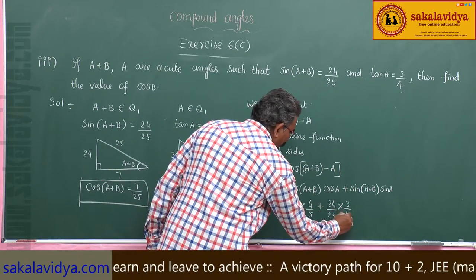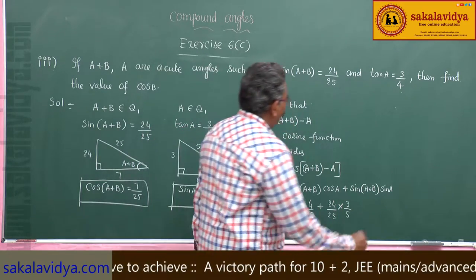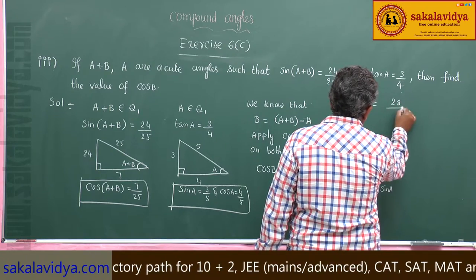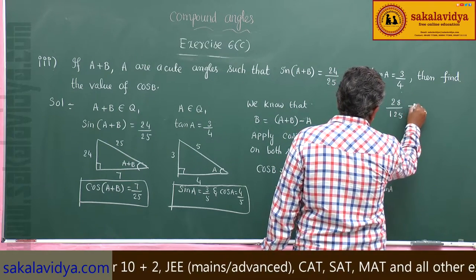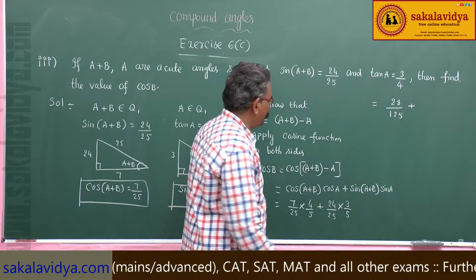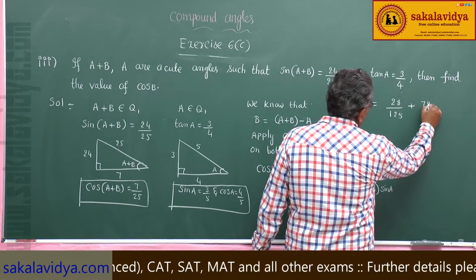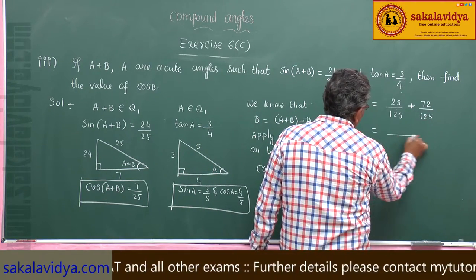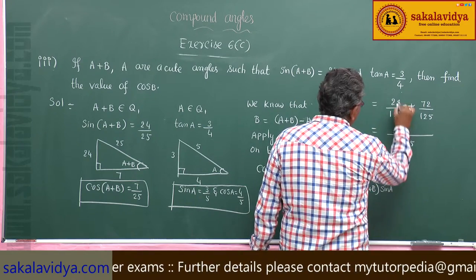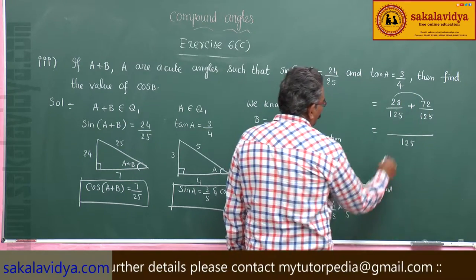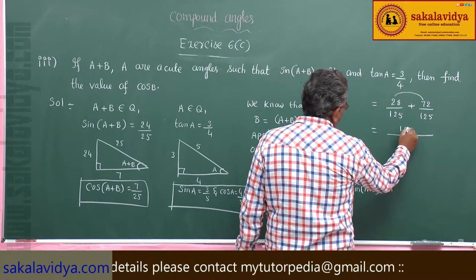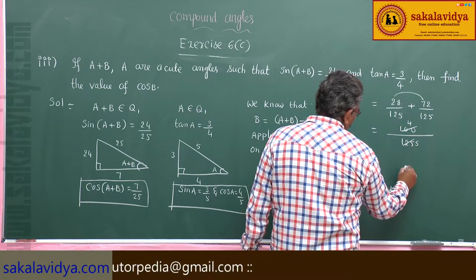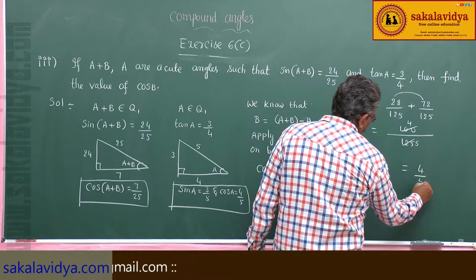Substituting the values: cos B = (7/25)·(4/5) + (24/25)·(3/5) = 28/125 + 72/125 = 100/125 = 4/5.